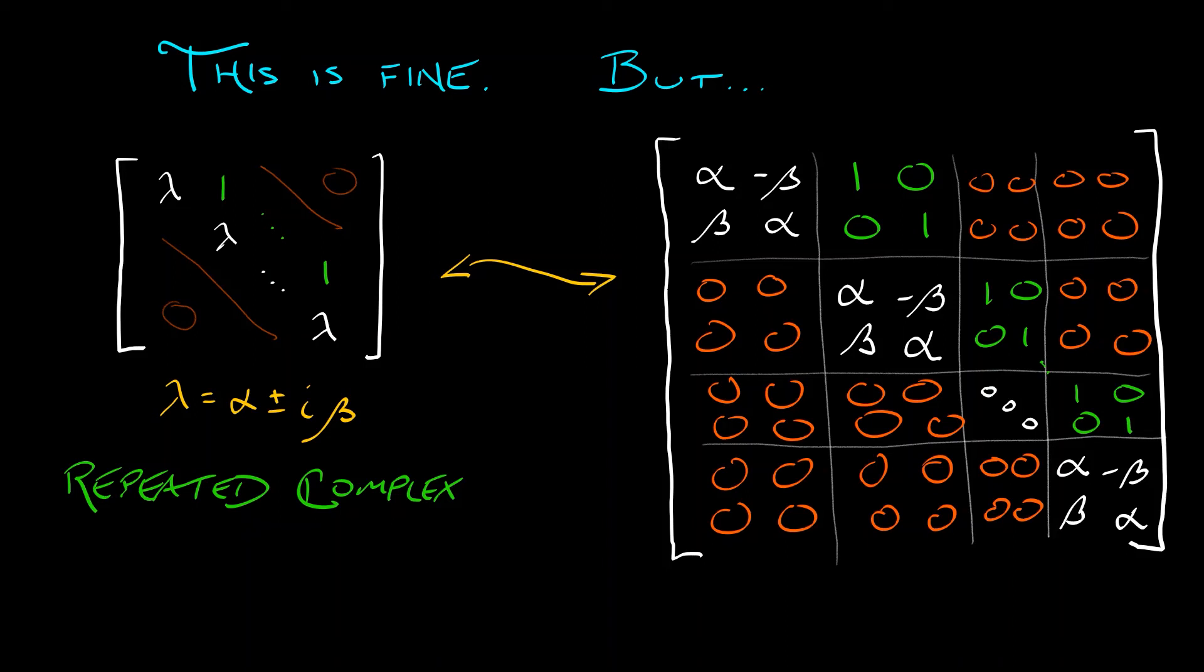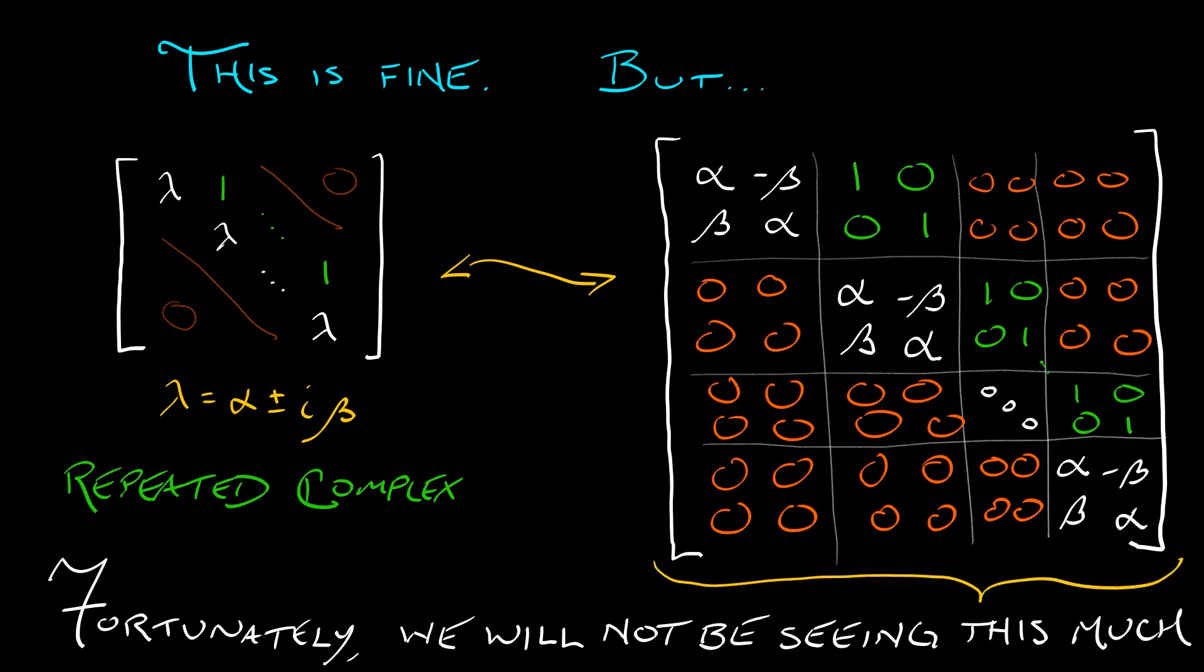Ooh, that's a little complicated looking. Fortunately, we're just not going to be seeing this too much. I mean, it is possible to get repeated complex eigenvalues, but I'm not sure that we're going to see it in the entire rest of this series. So yeah, you have to know that this exists and that there's a way to deal with it. But man, this does not look like fun. Nevertheless, we must persist.